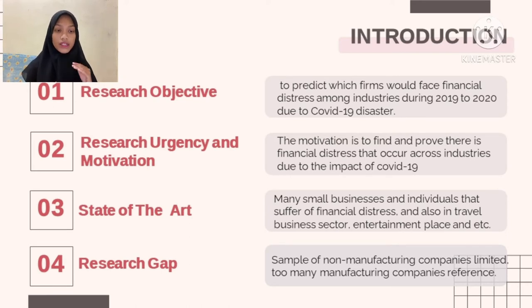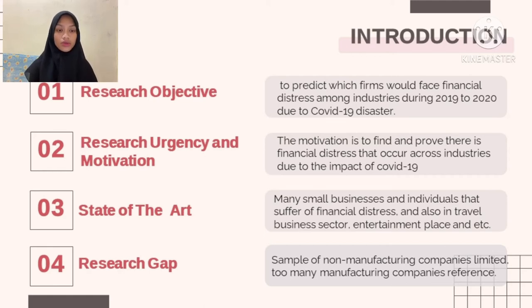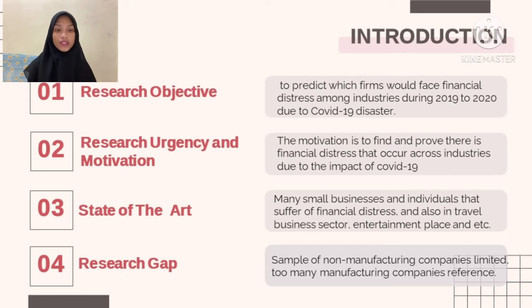First is introduction. For the research objective, I would like to predict which firm would face financial distress among industries during 2019 to 2020 due to the COVID-19 disaster. For the research urgency and motivation, the motivation is to find and prove that there is a financial distress occurring across industries due to the impact of COVID-19.